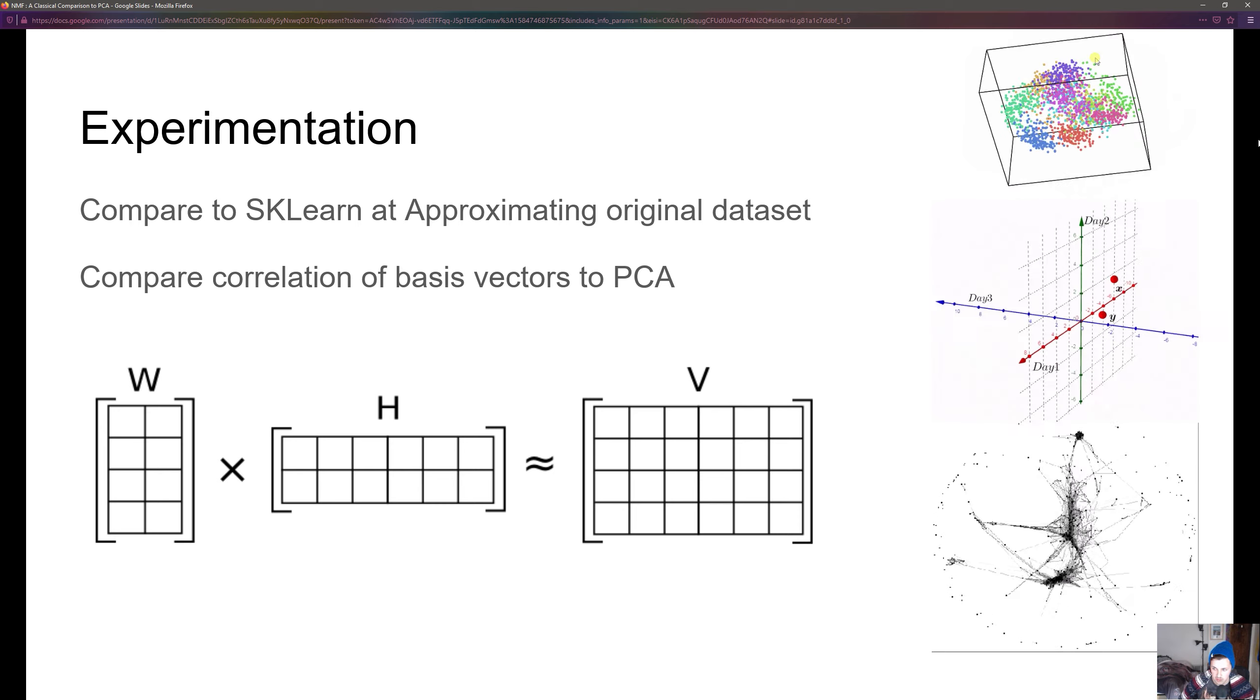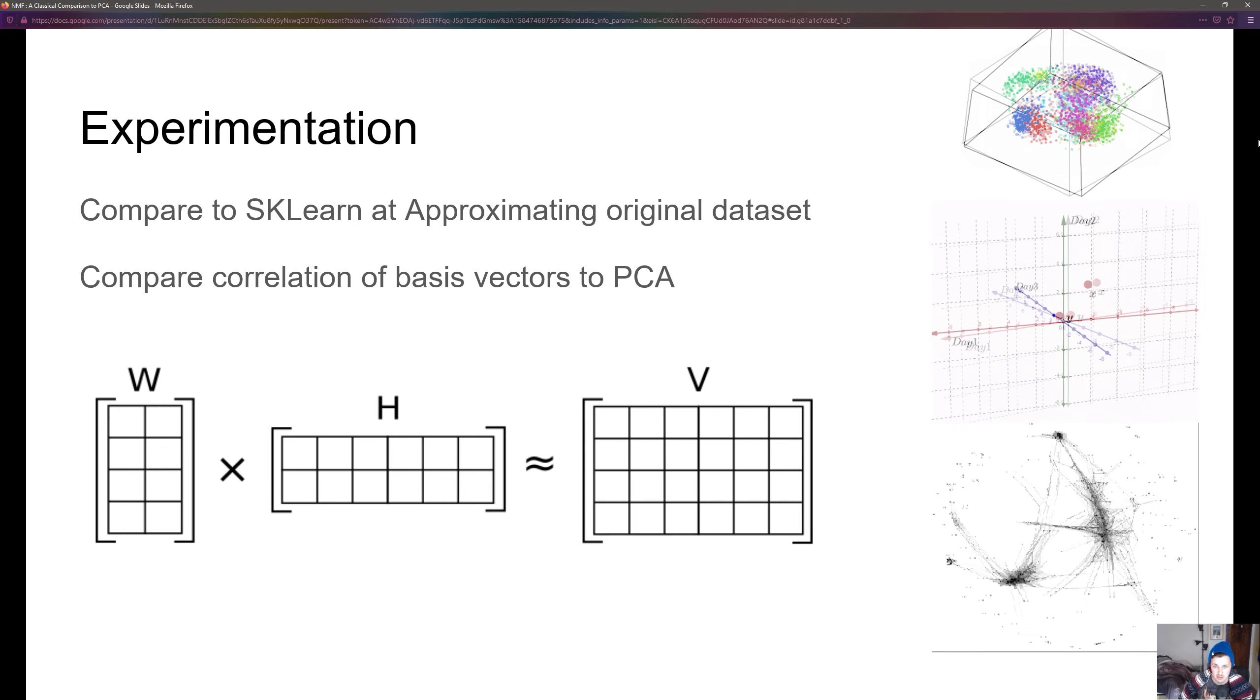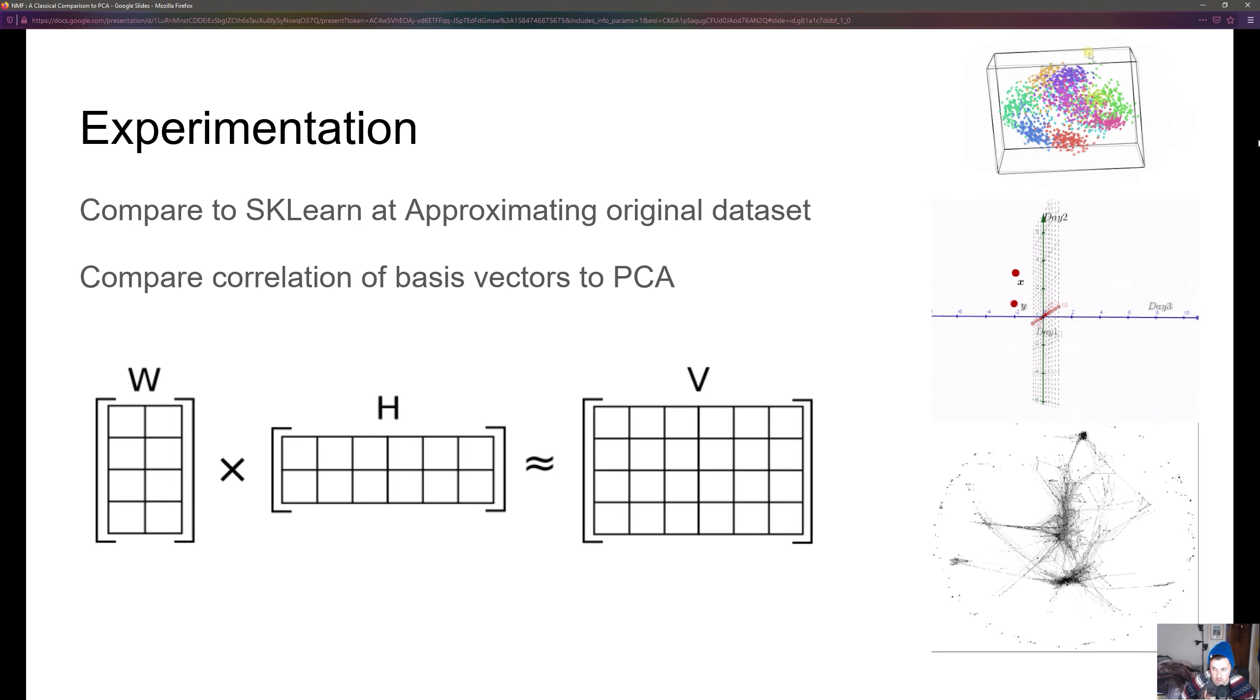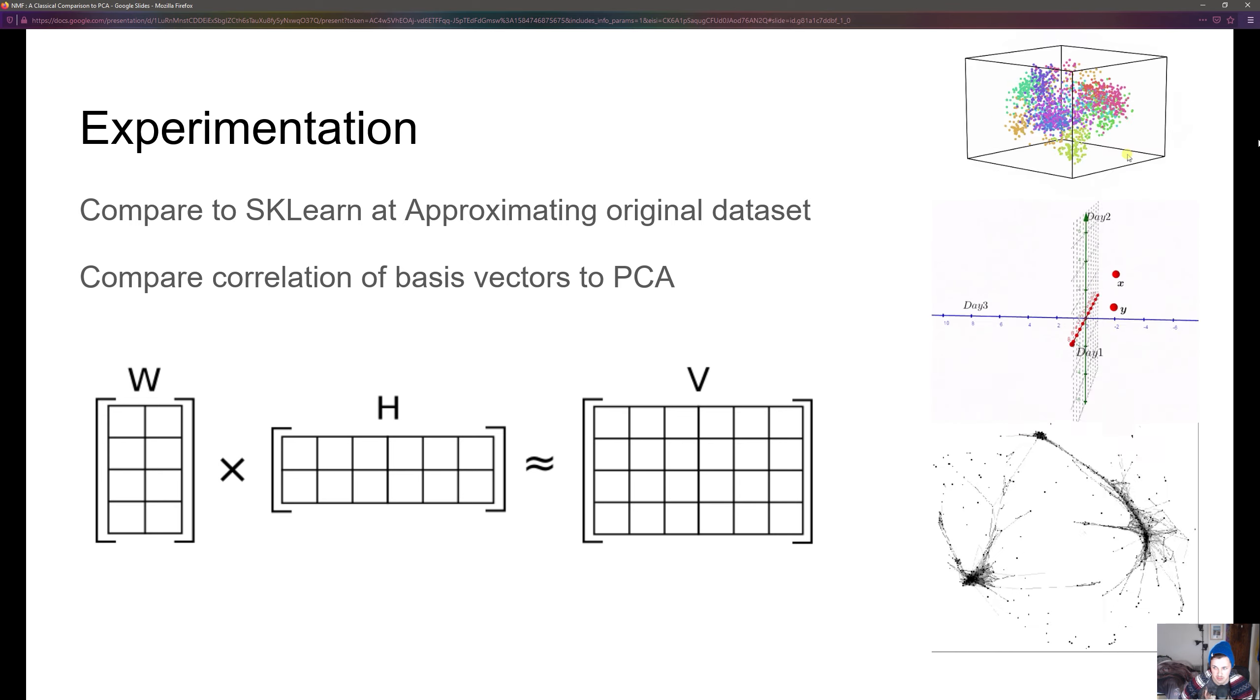The first thing I want to touch on is what I'm going to be talking about. We're going to be comparing scikit-learn and our NMF at approximating the original data set. And we're also going to be comparing correlations of basis vectors to PCA.